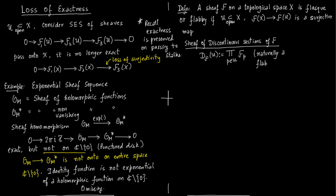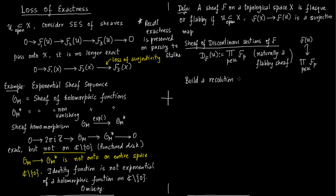You have a natural projection from F(X) — which is the direct product over all P in X — to F(U), which is the direct product over P in U, and you just project it, giving an onto map. We have already constructed the injectivity from F(U) into the direct product. So there is a flabby map from F to D(F) in terms of direct products — whatever points do not lie in U, just map them to zero.